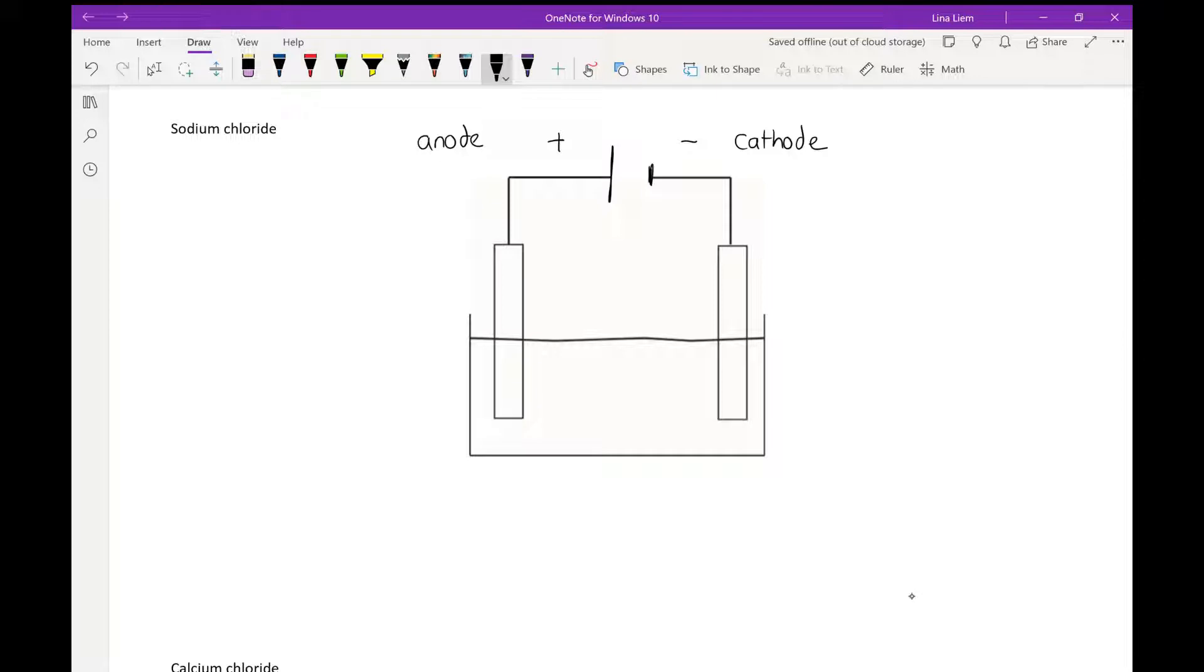Let's list down the ions present here. So since this is molten sodium chloride, we only have sodium ion and chloride ions. Remember, sodium ions are positive ions so it's attracted to the negative electrode, whereas anions are attracted to the positive electrode.